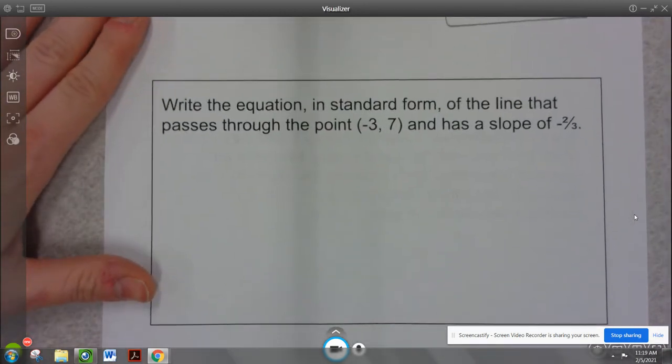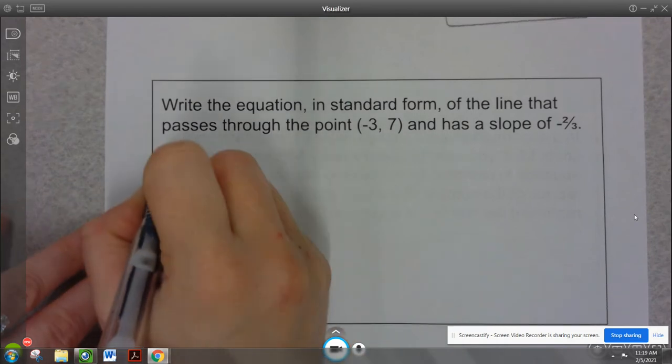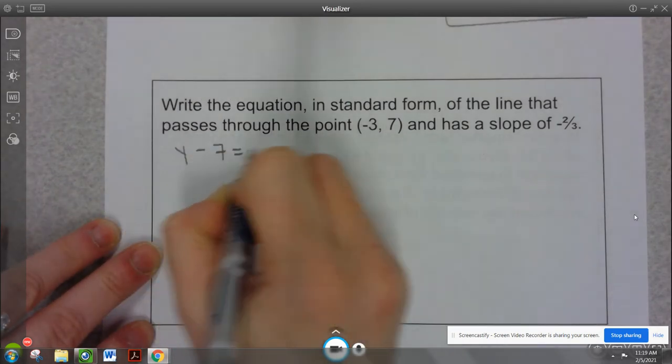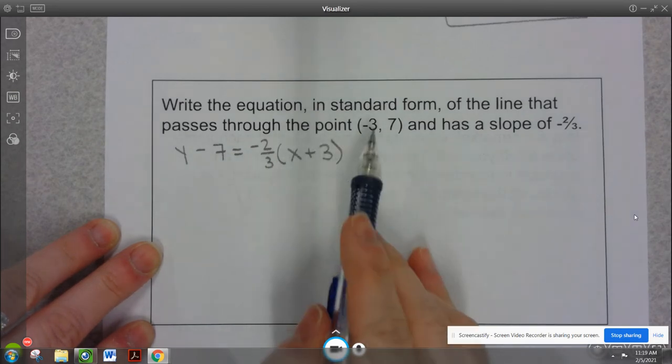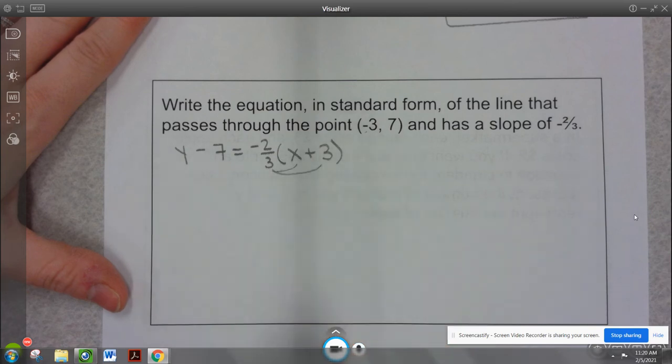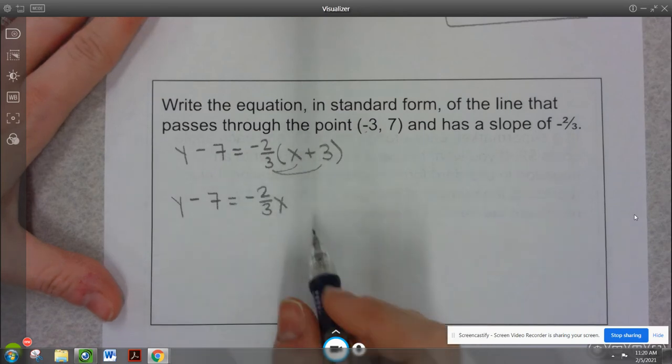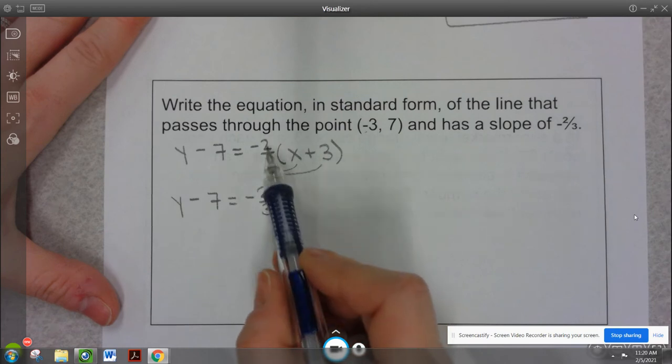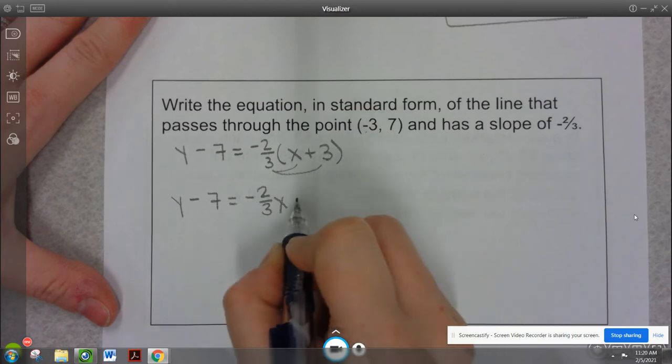All right, so we've seen this one a couple times now, this problem. We're going to write this in point-slope form and then redo it into standard form. So I have y minus 7 is negative 2 thirds times x plus 3 because remember it's minus negative 3. So the first thing I'm going to do is I'm going to distribute this. So I have y minus 7 is negative 2 thirds x. And remember from our last video, when I do negative 2 thirds times 3, that would be negative 6 thirds, which simplifies to negative 2.